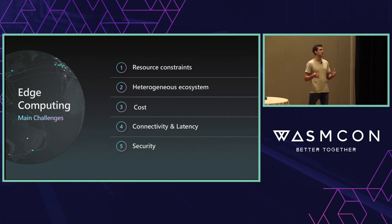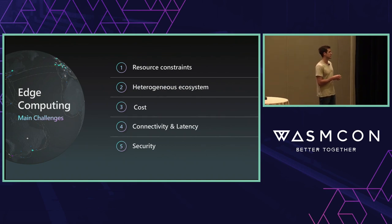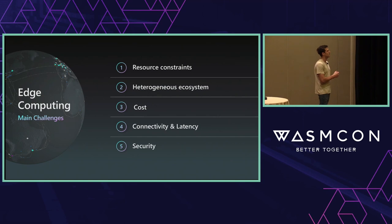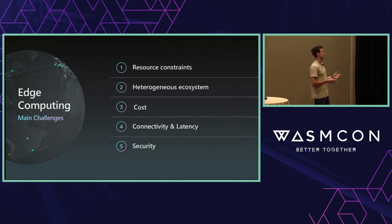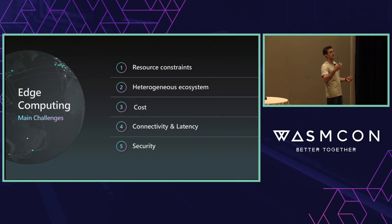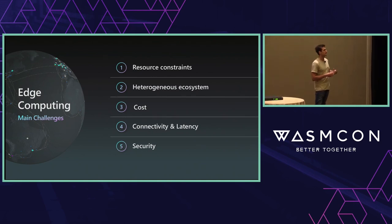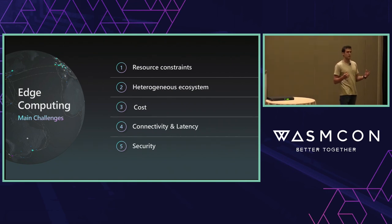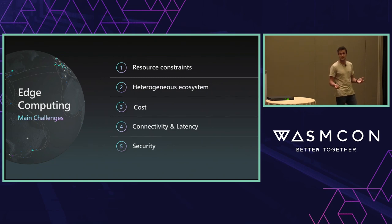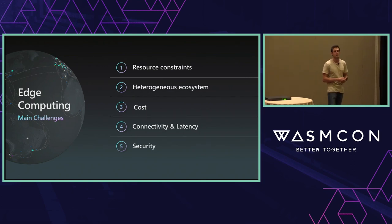Third: cost. It's not only the cost of purchasing devices — you might have a fleet of 20,000 devices — but also the cost of running your solution. If you're running an AI model on 20,000 devices and the model is energy efficient, that has a big impact. Same for connectivity: if you're downloading a container that wasn't optimized and it's 200-300MB, there's a bandwidth cost. Some customers run AI on ships where connectivity is really limited — sometimes just satellite, sometimes disconnected for months.